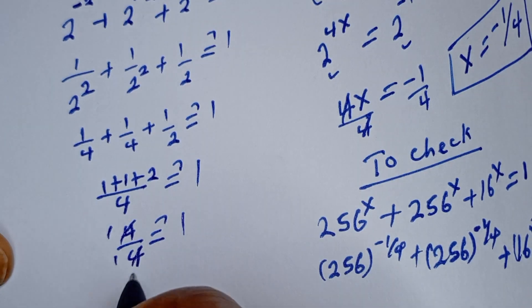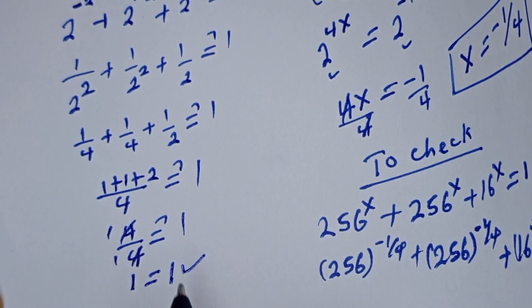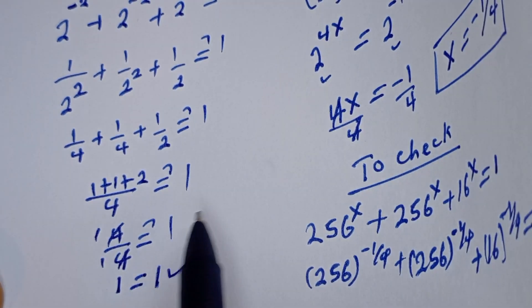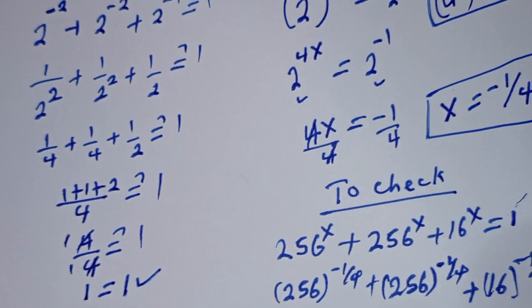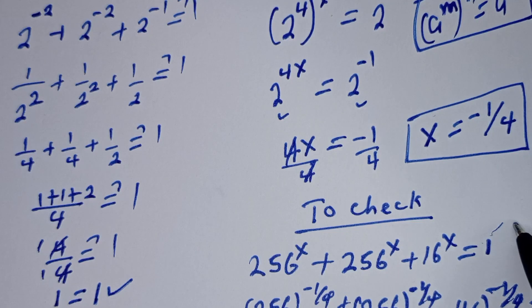Then 1 is equal to 1, which is true. The left hand side equals the right hand side, confirming s equals minus 1 over 4 is correct. I hope you enjoyed the video. Please don't forget to like, share, comment and subscribe to my channel. Thank you.